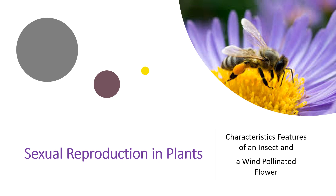Welcome, this is Teacher Jeffrey. Our topic is about characteristic features of plants using agents of pollination like insect and wind. If you haven't subscribed yet, click the subscribe button below and the bell button for notifications on upcoming topics. If the topic doesn't reach your understanding, click like and comment below. Let us start and dive in.